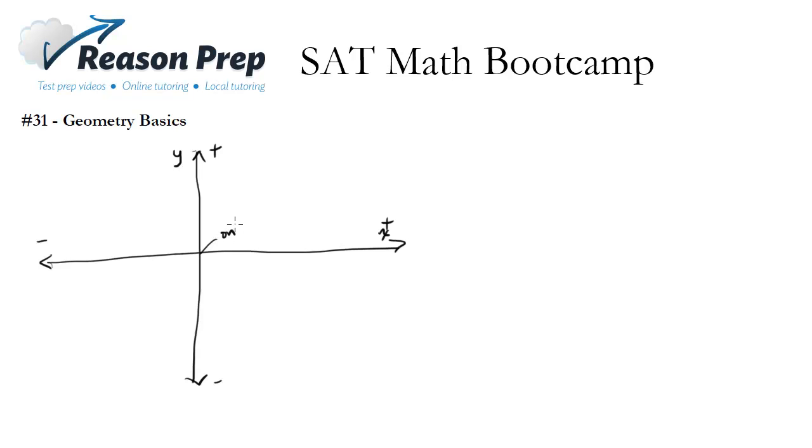This right here is known as the origin, and it's the point 0,0. And you can imagine we could have lines drawn through this, so this would be line L, this would be line M, and so on. So this is the basics of the coordinate axes for coordinate geometry.